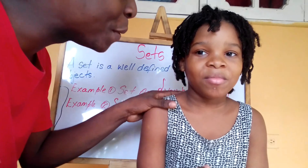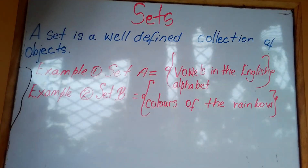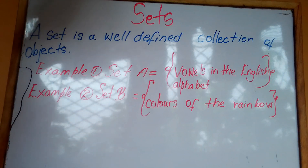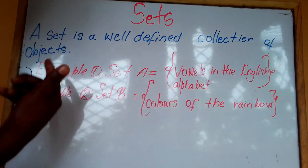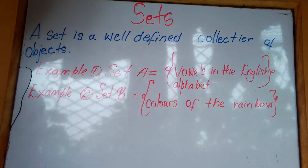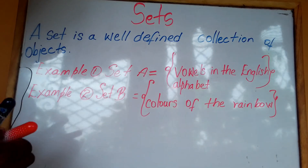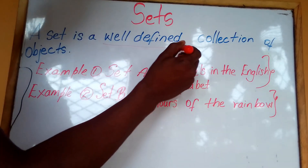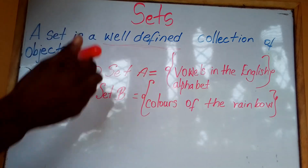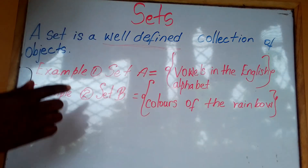What is a set? A set is a well-defined collection of objects. Here are some examples of well-defined sets. The key word is 'well-defined.'